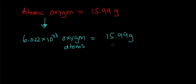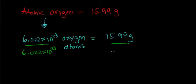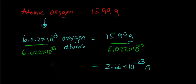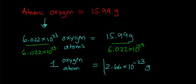Now, if I want to figure out the mass of an individual oxygen atom, what I need to do is divide both sides by 6.022 times 10 to the 23rd. When I do that, I can find the mass of an individual oxygen atom. Dividing both sides by 6.022 times 10 to the 23rd, the number I get is 2.66 times 10 to the negative 23rd grams. So one oxygen atom has a mass of 2.66 times 10 to the negative 23rd grams.